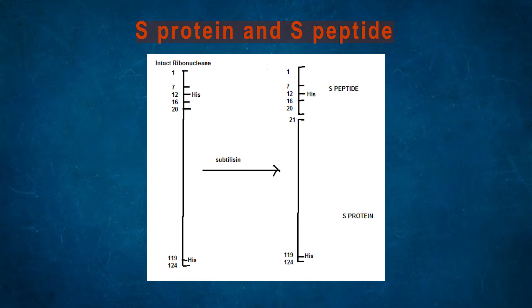RNase is treated with subtilisin, E. coli bacterial subtilisin. It was fragmented into S-protein and S-peptide. S-protein contains a conserved residue of RNase, histidine-119, and S-peptide, the shorter peptide, contains histidine-12.